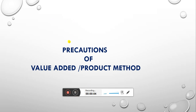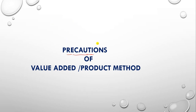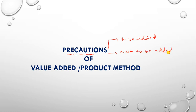Hello, my dear students. I am Mukesh Bharti and today we are going to discuss some of the precautions that we have to take while calculating national income through the Value Added Method. We will look at which items' values are to be added to national income and which items' values are not to be added. Sometimes in exams a statement is given asking whether it will be included in national income or not — these precautions will help with that.